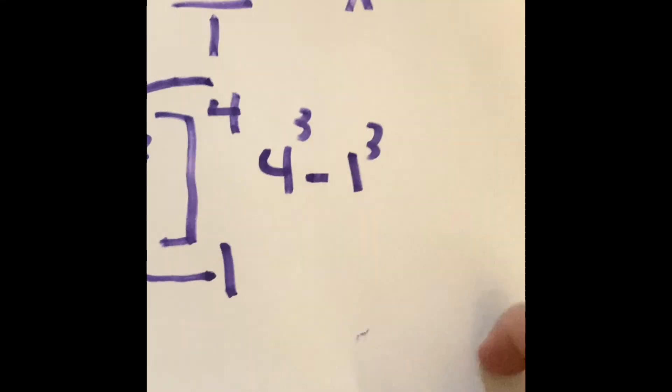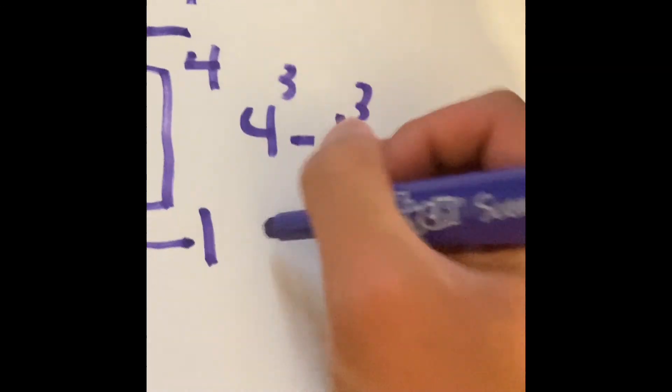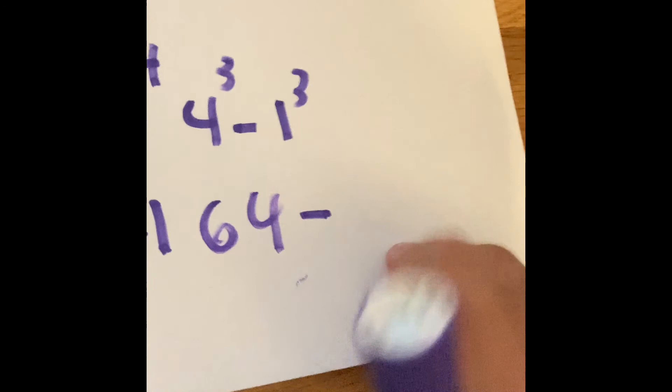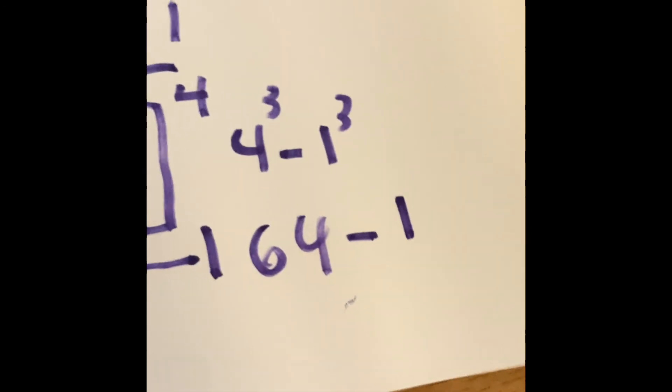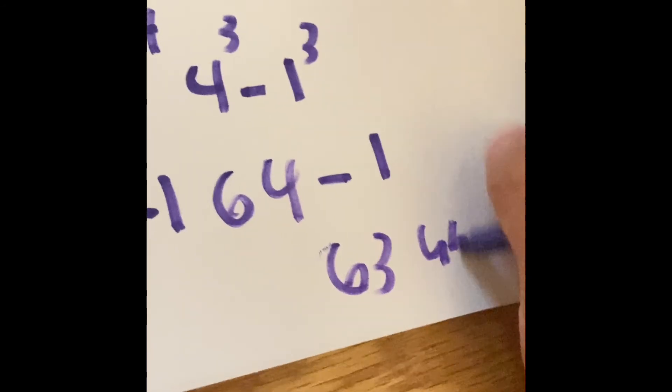So 4 times 4 times 4 is going to be 64. Subtract that by 1 times 1 times 1 is 1. So 64 minus that by 1 is 63 unit squared.